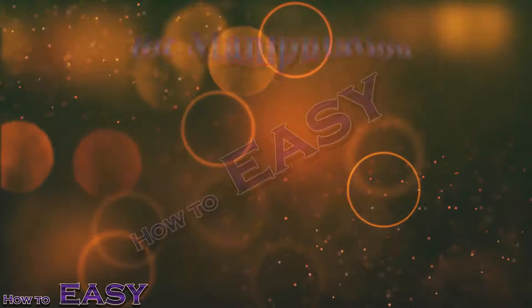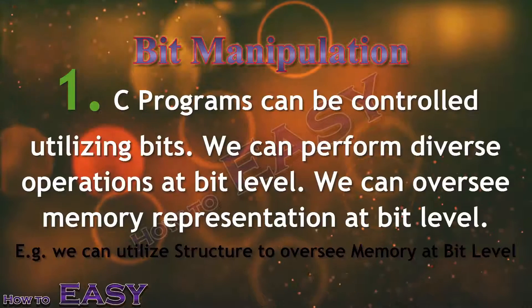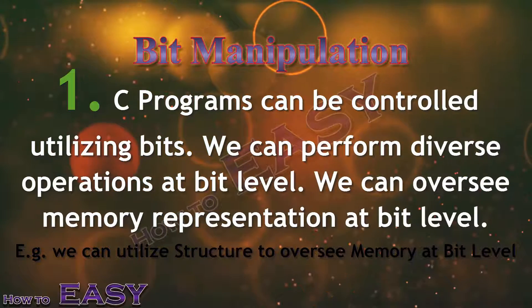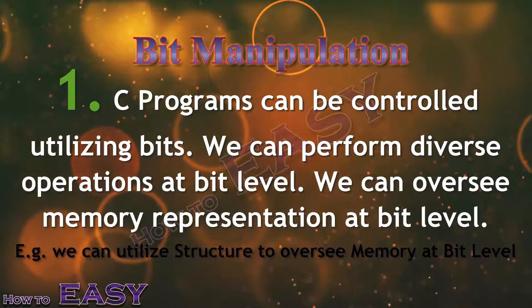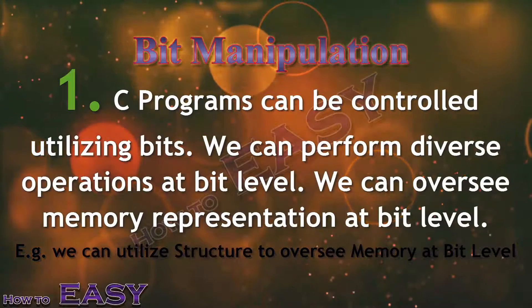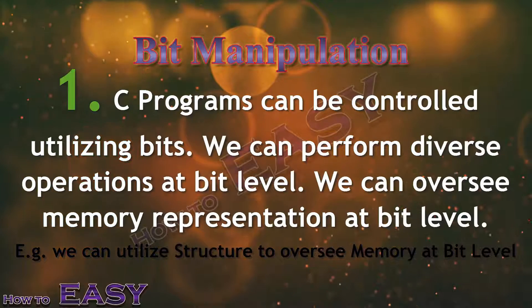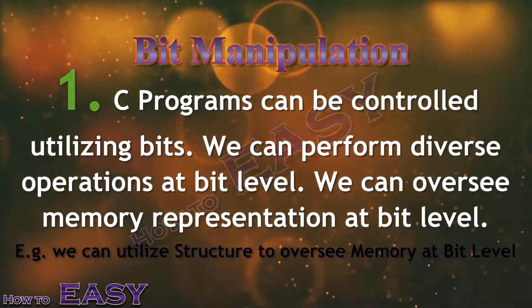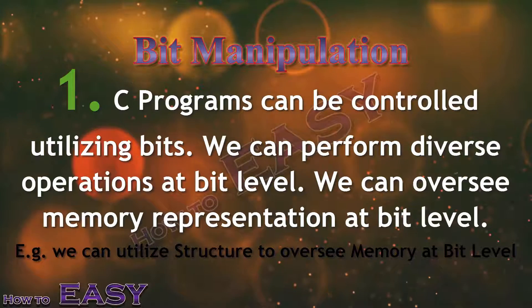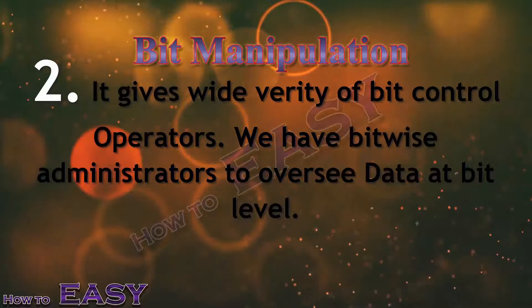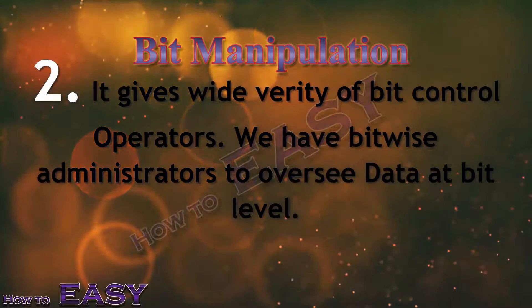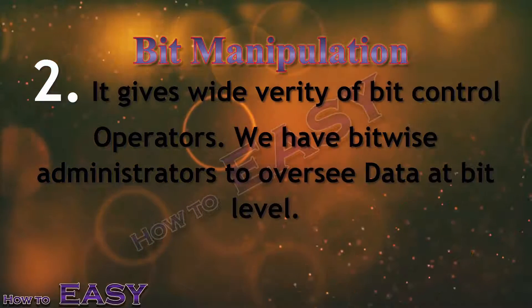Fourth, bit manipulation. C programs can be controlled utilizing bits. We can perform diverse operations at the bit level. We can manage memory representation at the bit level. For example, we can utilize structures to manage memory at the bit level. It gives a wide variety of bitwise operators to manage data at the bit level.